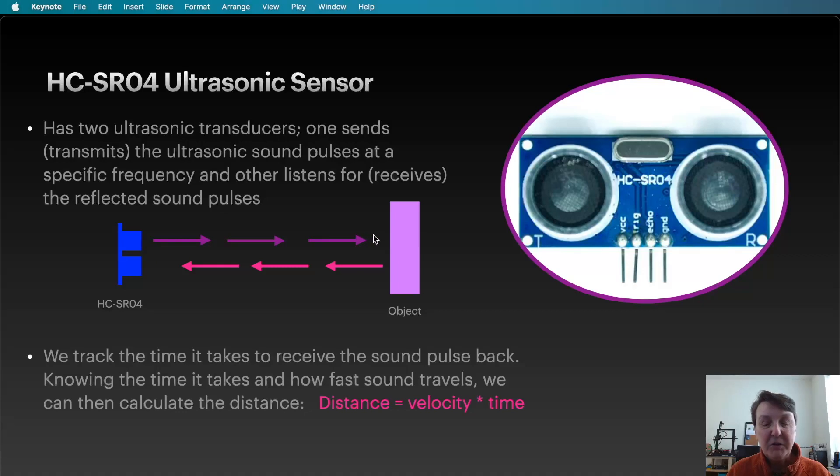Here it's sending out the ultrasonic sound pulse. It hits an object and then reflects it back and is received. We can track the time it takes for the sound to hit an object and come back and use that to figure out what the distance to the object is.